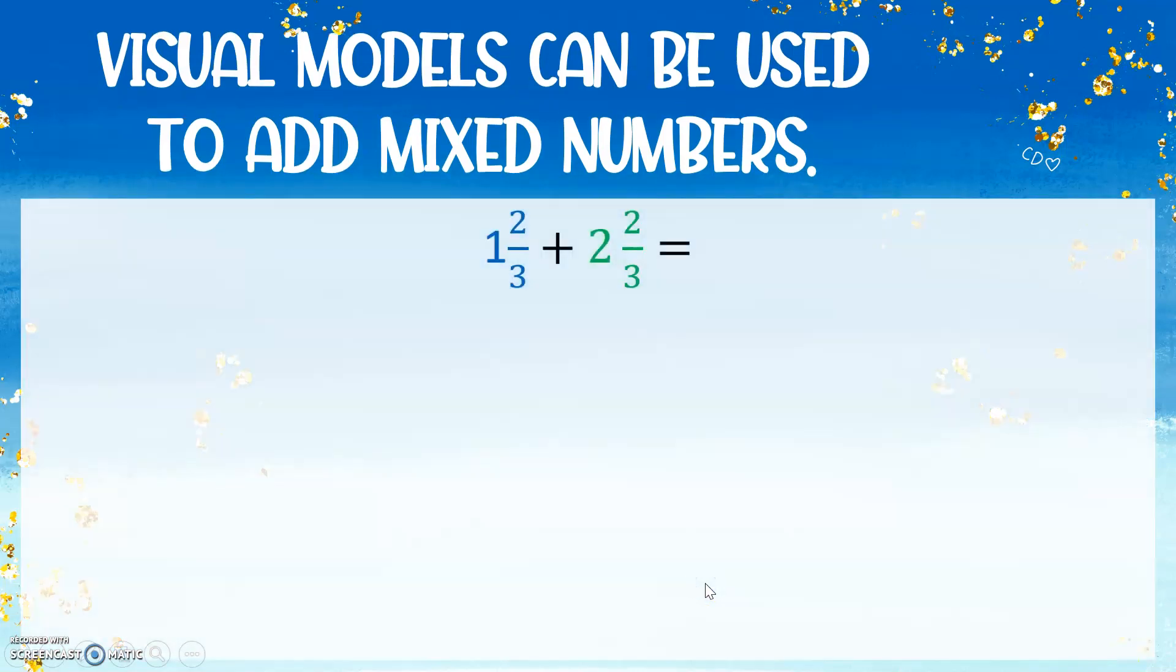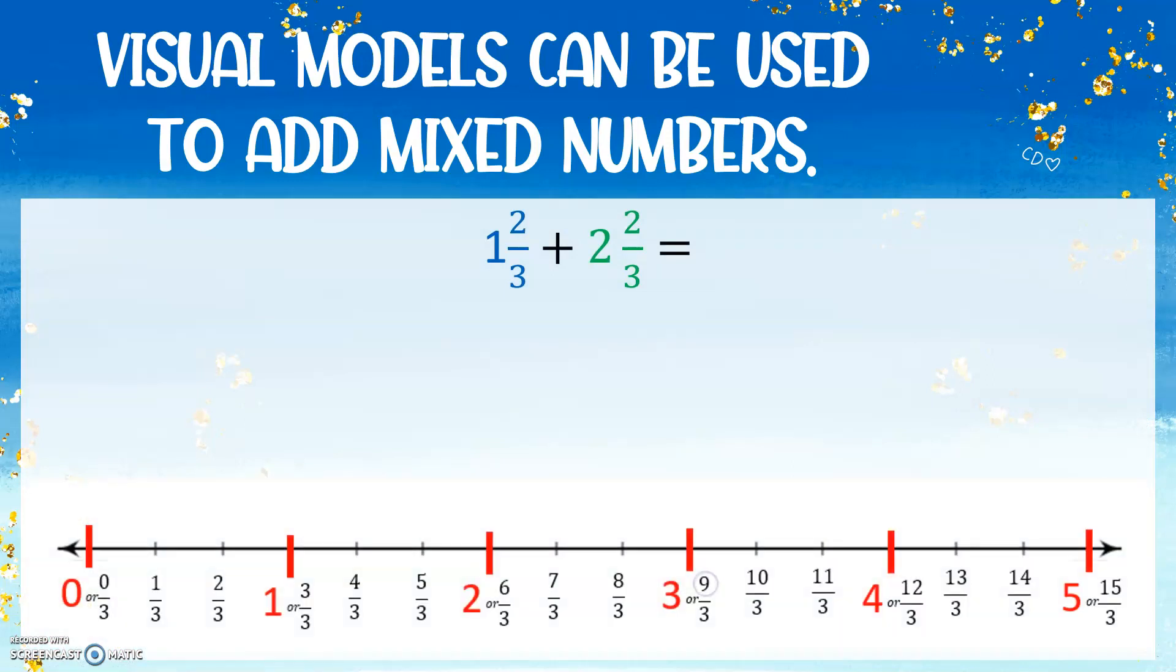We can also use it on a number line. So if we have 1 and 2 thirds plus 2 and 2 thirds, our number line is going to be split into thirds. I just used 5 wholes and then labeled the thirds in between because 5 is an easy number to use. So the first thing we're going to do, there's two ways we can do this.